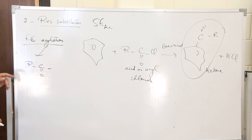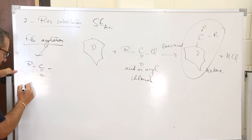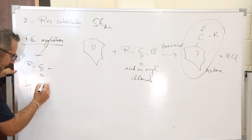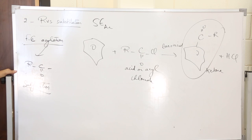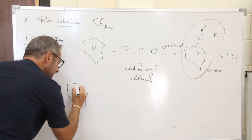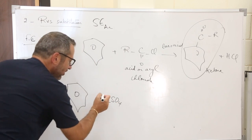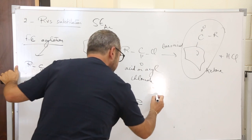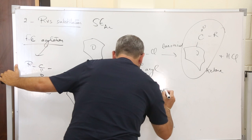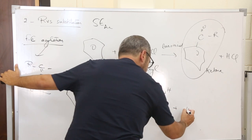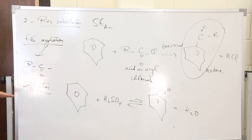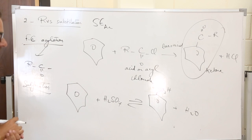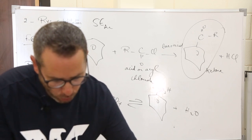We have seen many reactions on the benzene cycle. The last one is sulfonation, and I left it till the end because this is the only reaction which is reversible — I can attach the group on the benzene cycle and remove it. You take benzene and sulfuric acid H2SO4 — here it is a reagent, not a catalyst. This reaction gives benzene-SO3H plus water.